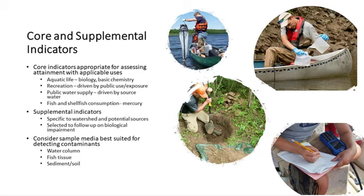One of the areas we wanted to talk about is: what do we monitor for? What are the core and supplemental indicators? This is a concept that allows states and tribes to be strategic about what pollutants they monitor, when and how frequently, and where they might monitor them. There's a core set of indicators that they routinely monitor everywhere, whether it's a statistical survey site or targeted site. And then they may add supplemental indicators based on what's going on at that site. In the water quality standards presentation that preceded this one, Pete talked about the designated uses and specifically the aquatic life use and the recreational use — those are the primary uses that state ambient surface water monitoring is focused on.